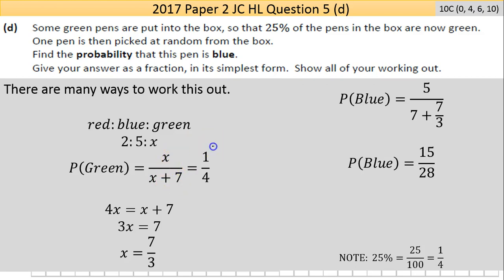Now we make this statement that this probability x/(x+7), which we don't know because we don't know x, is equal to 1/4 which we were told equal to the 25%. Now that's an equation of one unknown.